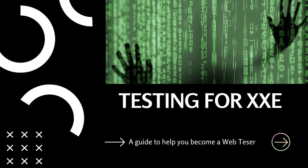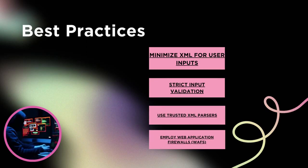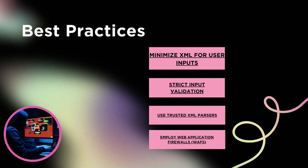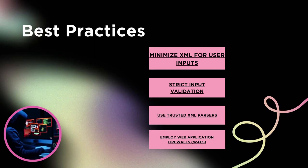Let's talk about how we can test for XXE. To ensure the security of your applications, it is essential to test for XXE vulnerabilities. Penetration testing tools like BurpSuite and OWASP ZAP can help identify potential vulnerabilities, whereas manual testing techniques involve crafting a malicious XML payload to see if the application is susceptible. Best practices include: minimizing XML for user inputs — avoid using XML for data inputs whenever possible; strict input validation — implement rigorous input validation and sanitization procedures; using trusted XML parsers — always choose well-tested and secure XML parsing libraries; and employing web application firewalls (WAFs) to add an extra layer of protection against XXE attacks.